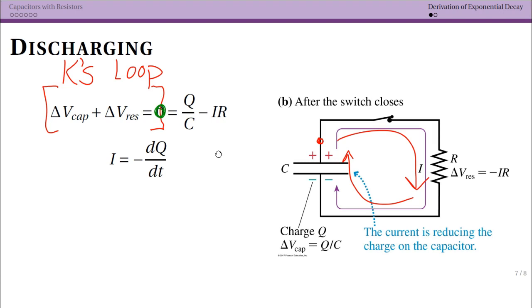Then we're going to look at the individual potential differences. So the potential difference across our capacitor is simply Q over C. And note that this Q is going to be a function of time. So whatever your potential difference is as a function of time is going to be the charge in that exact moment divided by the capacitance.